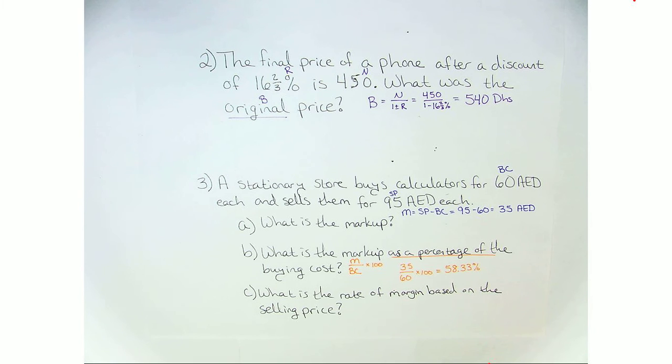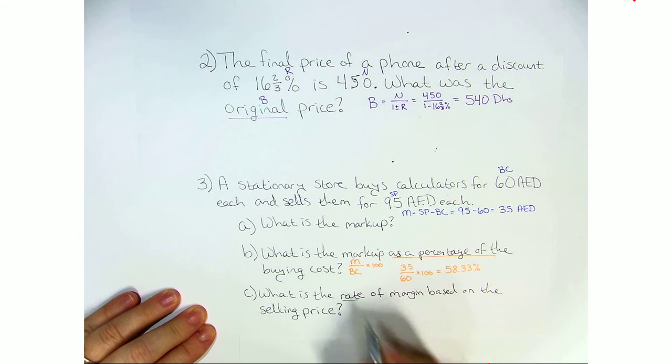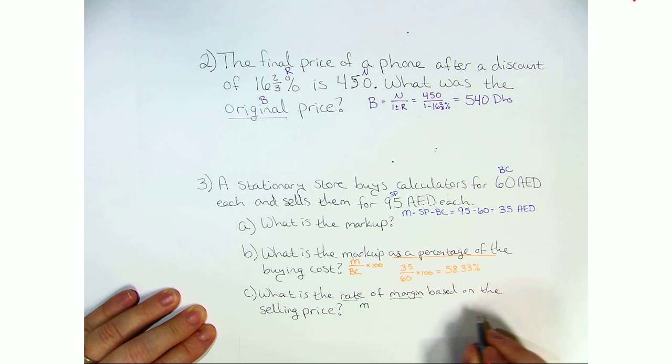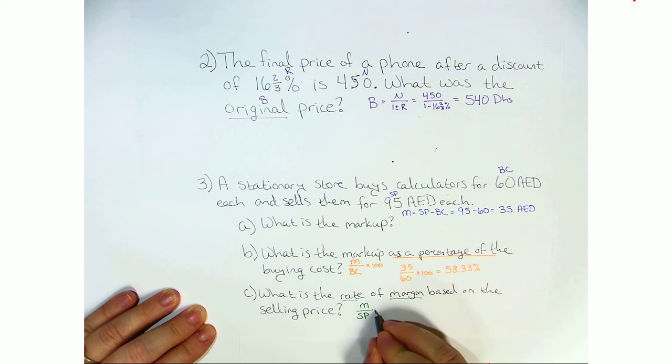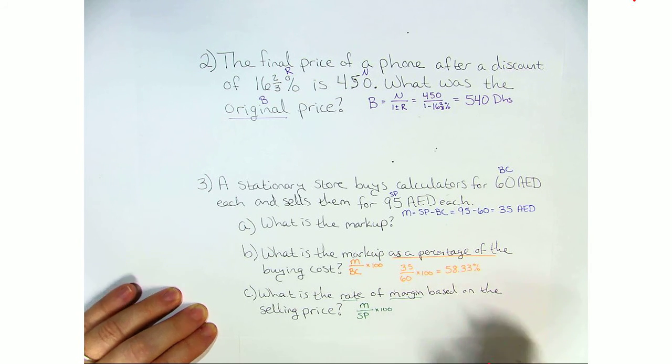And finally, the last question for this page. What is the rate of margin based on the selling price? So it's got some different words, but the idea is the same. The rate is our percentage rate. Margin goes on top based on the selling price, meaning our selling price is going to be our base. To make it a percentage, we have to multiply it by 100.